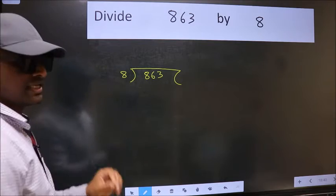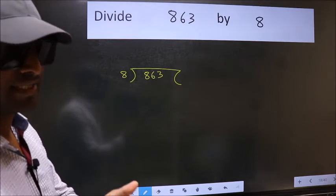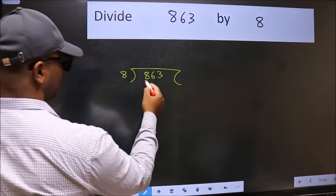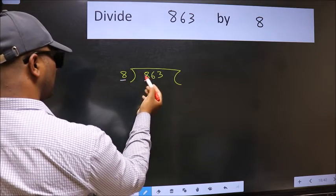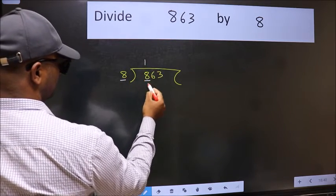This is your step 1. Next, here we have 8 and here 8. When do we get 8 in 8 table? 8 once 8.